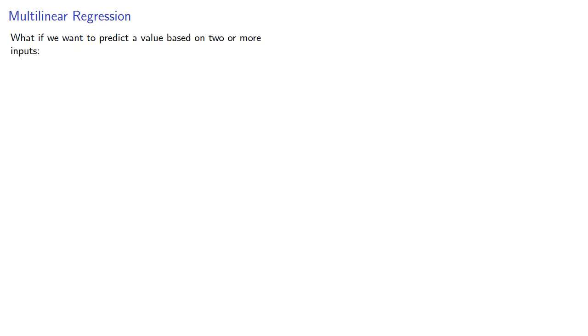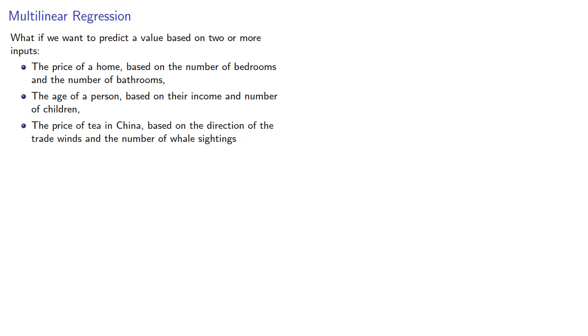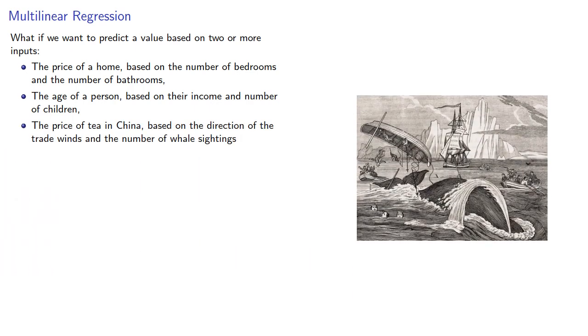What if we want to predict a value based on two or more inputs? For example, the price of a home based on the number of bedrooms and bathrooms, the age of a person based on their income and number of children, or the price of tea in China based on the direction of trade winds and whale sightings.